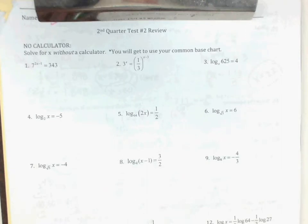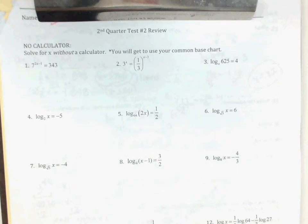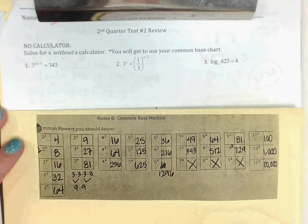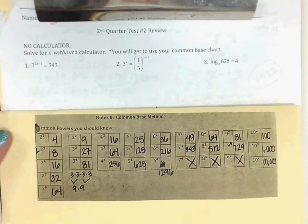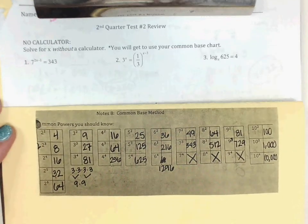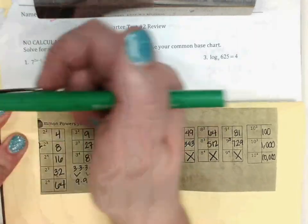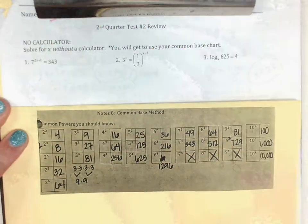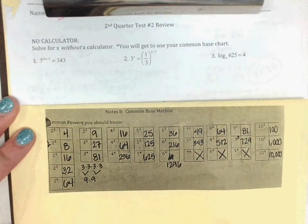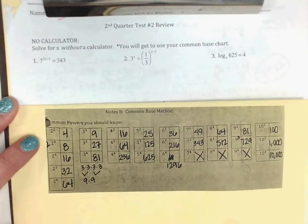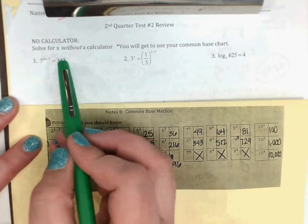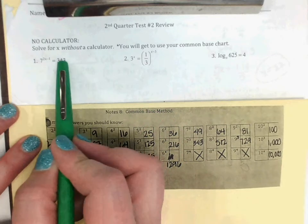We started this review. I'm going to put my little chart up here and we'll just skip around. Okay, so number one — I have 7 as the base on the left. I need 343 to be a base 7 as well.